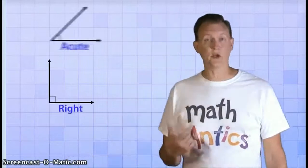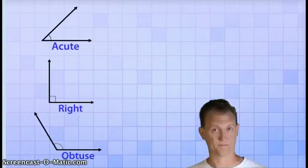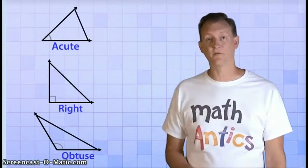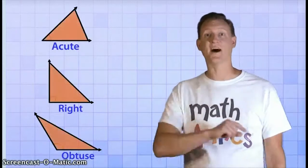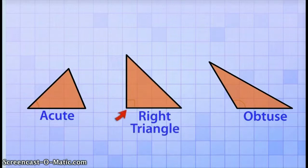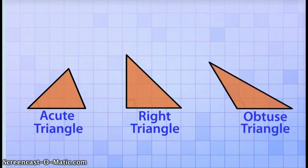You may remember from our first video about angles that there's three types of angles. There's right angles, acute angles, and obtuse angles. Well, watch what happens if we use a third line in each of these angles to form closed shapes. Aha! Triangles. And can you guess what these three different kinds of triangles are called? Yep. The one made from the right angle is called a right triangle. The one made from the acute angle is called an acute triangle. And the one made from the obtuse angle is called an obtuse triangle.